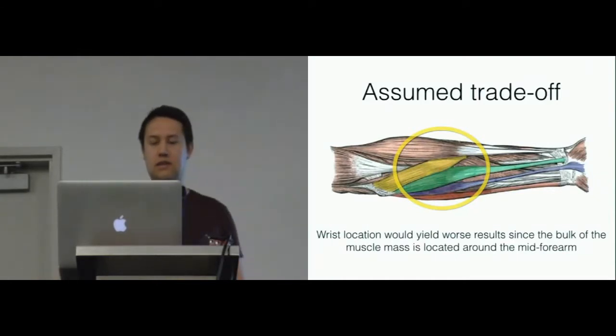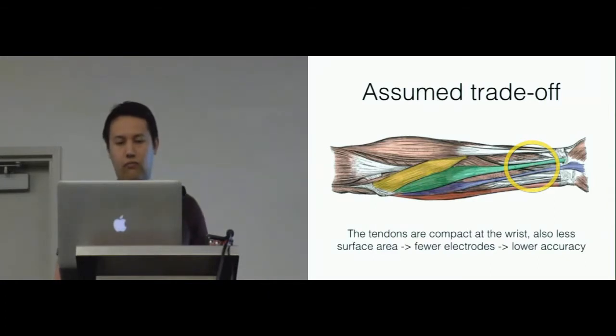Typically, EMG is used where the bulk of the muscle is, because of the stronger signal you get. The trade-off that we had assumed from moving EMG to the wrist was that the wrist location would yield worse results. Also at the wrist, there is less surface area, so there are fewer places where you can place electrodes, and it's more difficult to differentiate between different muscles because they're so compact.